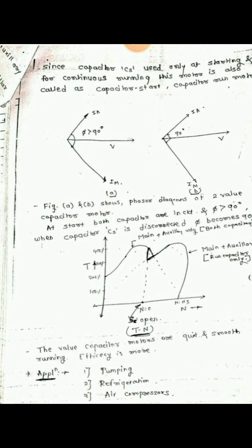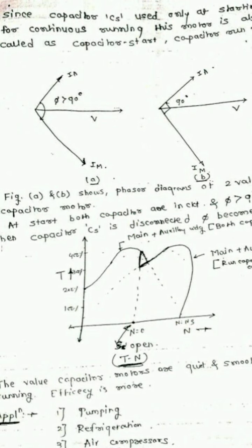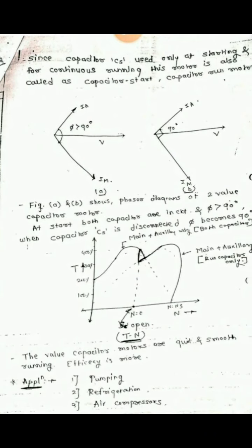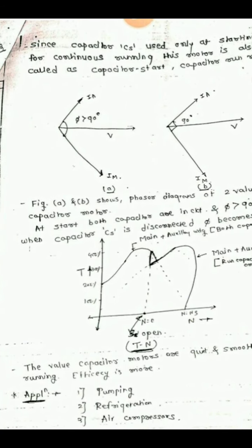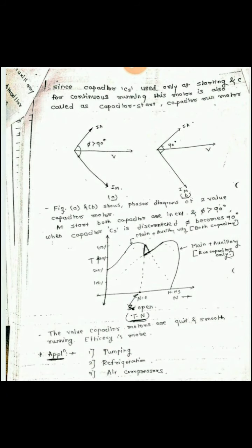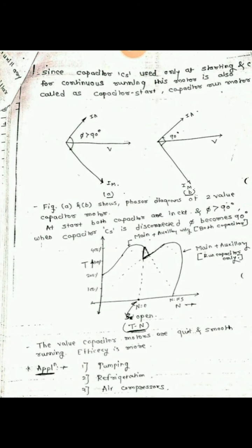The torque-speed characteristics of the capacitor start capacitor run motor show torque on the Y-axis and speed on the X-axis. At starting, both the main and auxiliary windings with both capacitors are in the circuit. After the centrifugal switch S opens, only the run capacitor remains in the circuit with the main and auxiliary windings. This motor uses the capacitor for both starting and running conditions, making it quiet and smooth running.